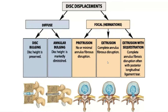If you start getting a protrusion, the nuclear material — the dark blue part of the disc — starts to bulge out a bit more and can start to go back into where the spinal cord runs. In most cases those aren't going to cause really severe problems. But as you get further out into extrusion, or extrusion with sequestration, that disc material can start to put pressure either on the nerve roots going out into your legs or on the spinal cord itself.